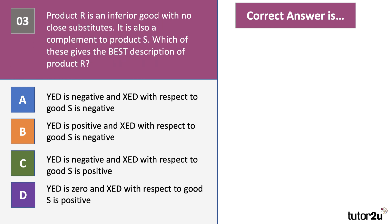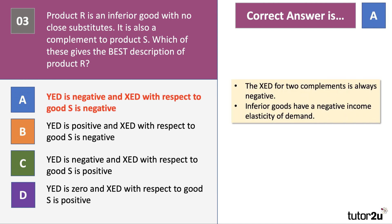Question 3 is a bit wordy but let's work through it. Product R is an inferior good with no close substitutes, and it's also a complement to product S. Since product R is inferior, it must have a negative income elasticity of demand — so the answer must be A or C. The cross-price elasticity of two complements is always negative, so combining both conditions the answer must be A.